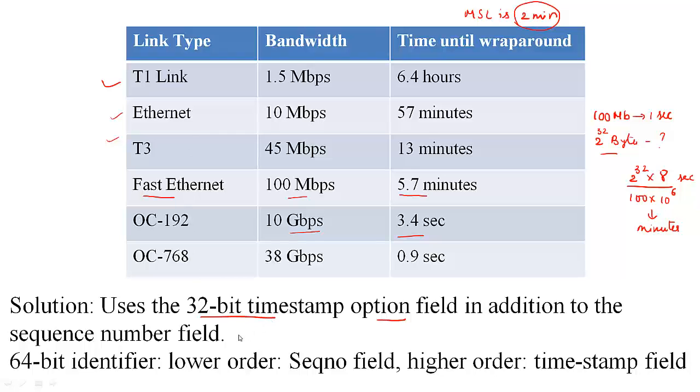What instead they did was to use an option field. TCP had this 32 bit timestamp option field where the sender timestamps a packet before sending. So what is done is each segment now has a 64 bit identifier where the lower order bits come from the sequence number field and the higher order bits come from the timestamp field. That's how TCP handles sequence number wrap around.